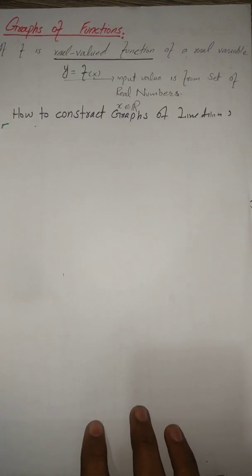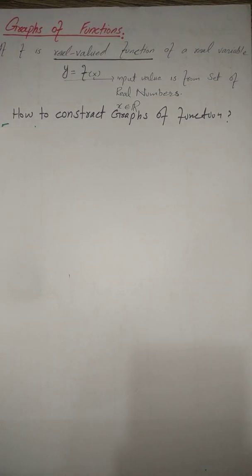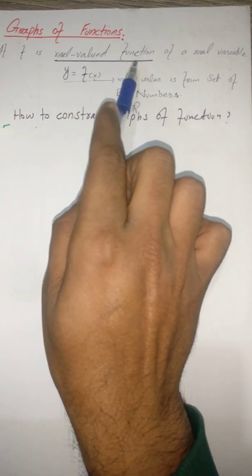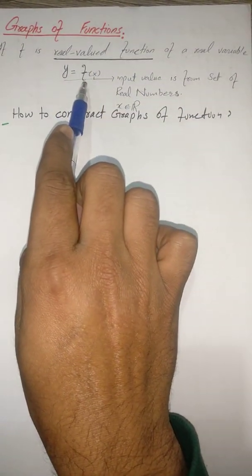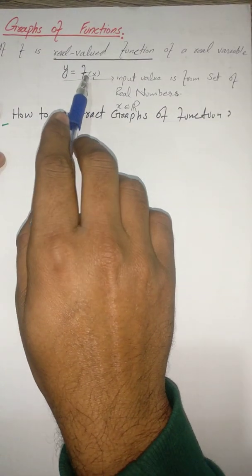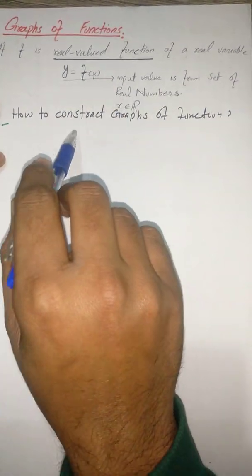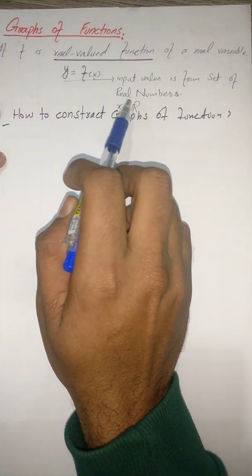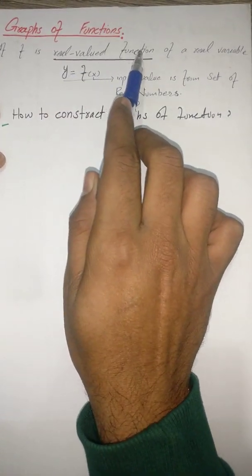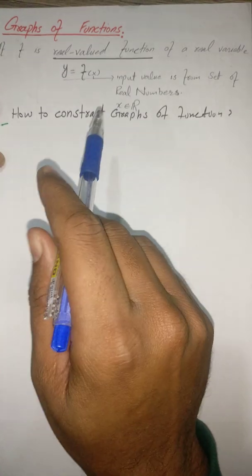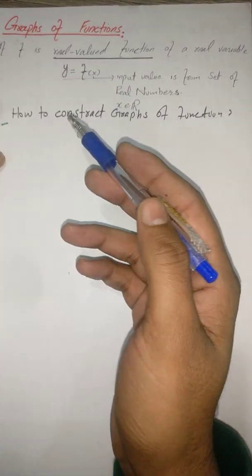So the question is: how can we construct the graph of an algebraic expression? In this lecture we will discuss how to construct graphs. Before we start, let's first discuss what is a real-valued function. If f is a real-valued function of a real variable, y = f(x), the function f(x) is said to be real-valued if the input value x is from the set of real numbers.